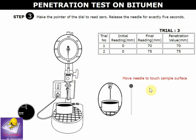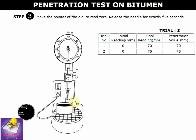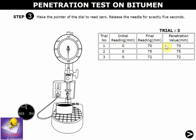Repeat one more time for trial 3: replace the needle and start the machine. Switch on the machine — that's the point — and the trial 3 reading is 72. The tabular form is now completed.